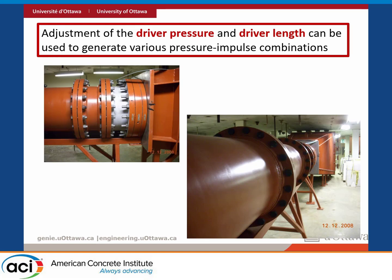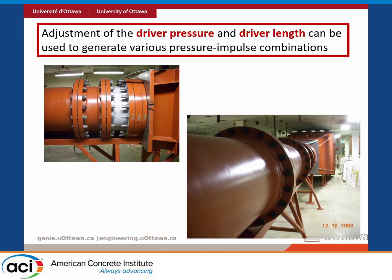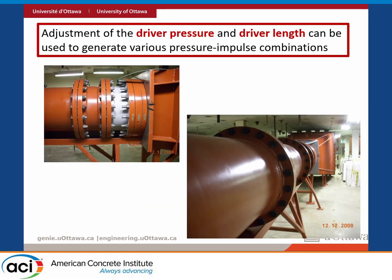We can vary the key parameters of the shock wave in the shock tube. You have the peak pressure, the duration of the shock wave, and the impulse — the area under the curve, which is like the blast energy. By playing with the driver length — making it longer or shorter — you can vary the positive phase duration. And by changing the amount of pressure fed into the shock tube, you can vary the peak pressure, giving different combinations of pressure and impulse.